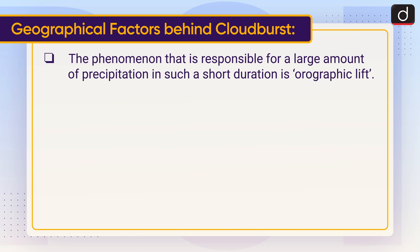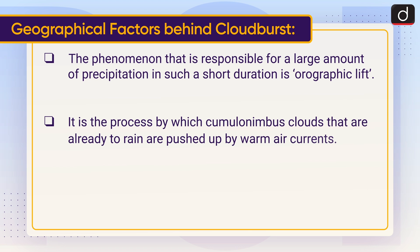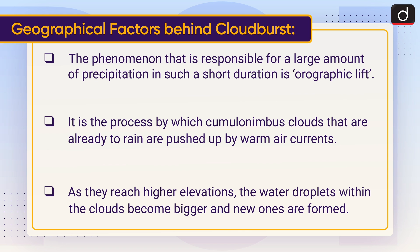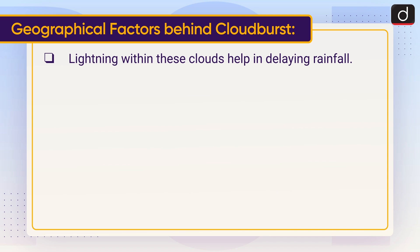The phenomenon responsible for large amounts of precipitation in such a short duration is orographic lift. It is the process by which cumulonimbus clouds that are already primed to rain are pushed up by warm air currents. As they reach higher elevations, the water droplets within the clouds become bigger and new ones are formed.